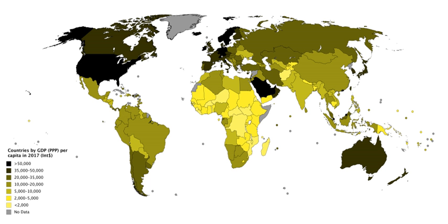In 2013, the OECD Better Life Index was published by the OECD. The dimensions of the index included health, economic, workplace, income, jobs, housing, civic engagement, and life satisfaction.